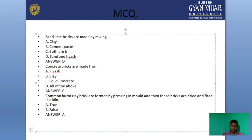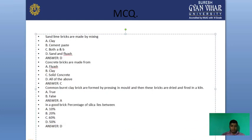Next question: in a good brick, the percentage of silica lies between — options: 10%, 20%, 60%, or 50%? We studied in the first lecture that silica content in a good quality brick is 60%, but the correct answer given here is 50%. The percentage of silica in a good quality brick is approximately 50 to 60 percent.